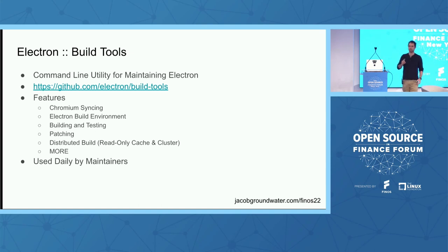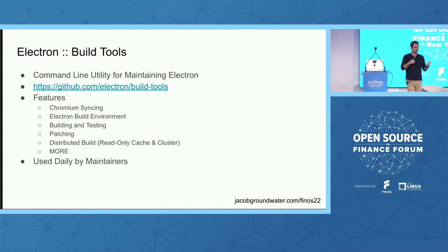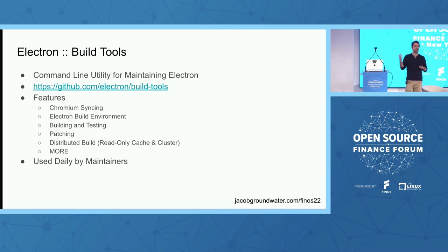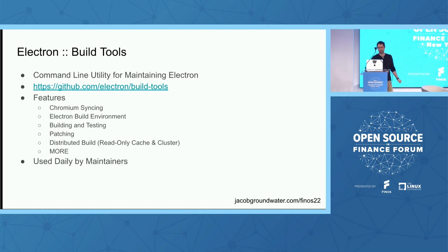Build tools gives you an added benefit: we have a distributed build system. We'll give you access to the read cache, so if you're building a recent version of Electron, someone else has probably already built it and you'll pull in those cached files. Remember, we're doing the whole Chrome build with Electron, so it's a big build.